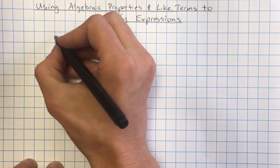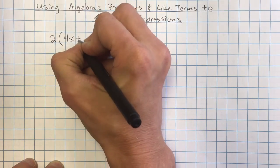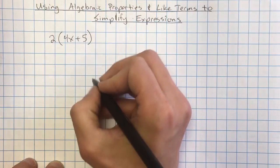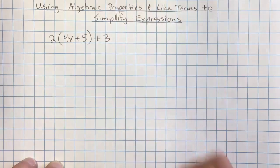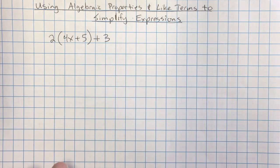For example, you might have something like 2 times 4x plus 5 and then plus 3. And if you have this, we want to try to simplify it down to a smaller thing.